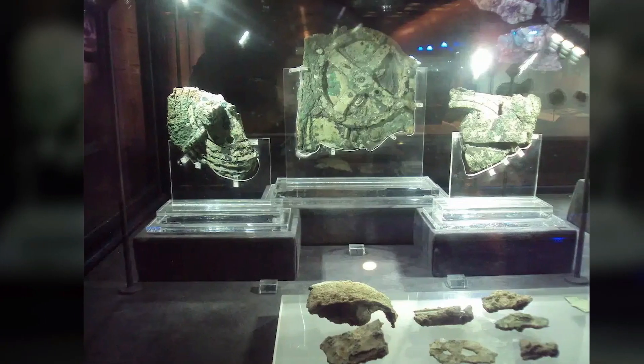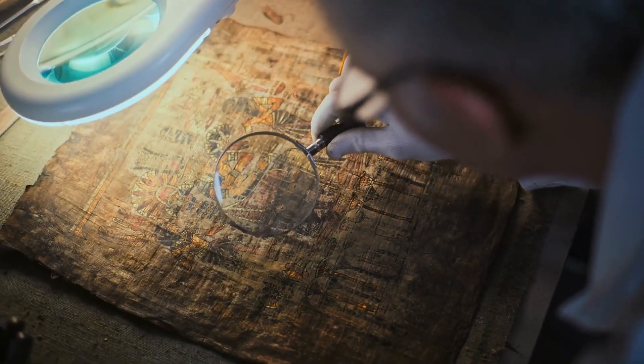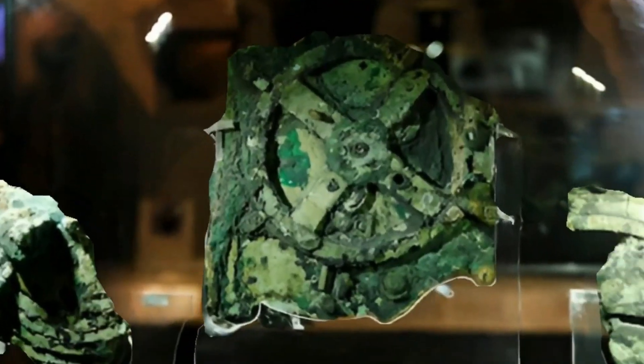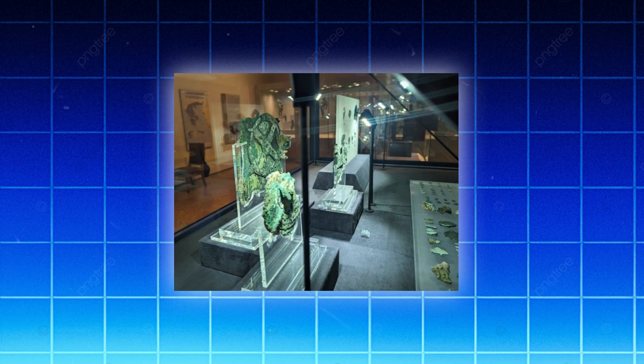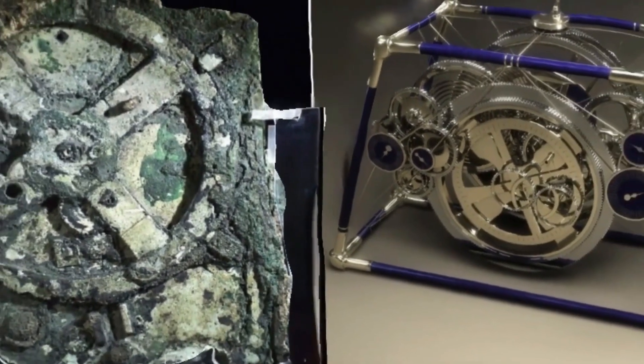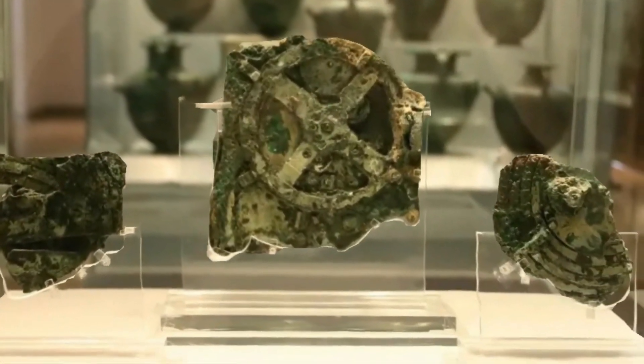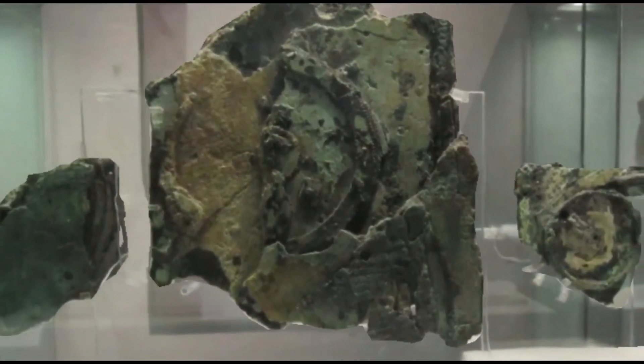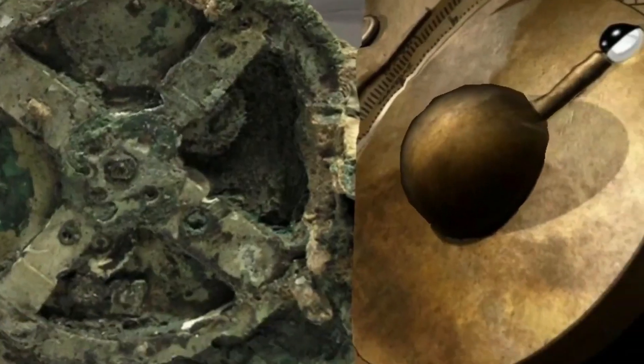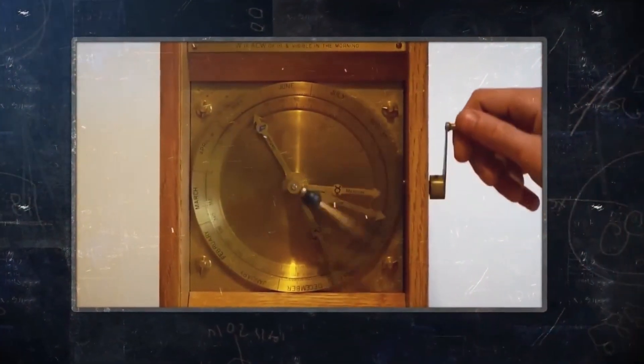The Antikythera mechanism raises questions about technological progress. No similar devices appear in historical records for over a thousand years, creating a gap in the timeline of mechanical innovation. Some attribute this to historical disruptions, such as the Roman conquest of Greece around 146 BCE, which destroyed cities and libraries. Others suggest the mechanism's bronze components were melted down for weapons or statues, erasing evidence of similar technology. Another theory posits that the device was exclusive, reserved for elite astronomers or priests, limiting its spread.